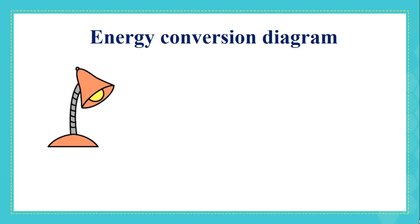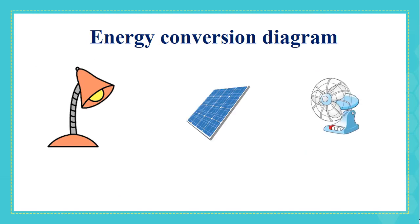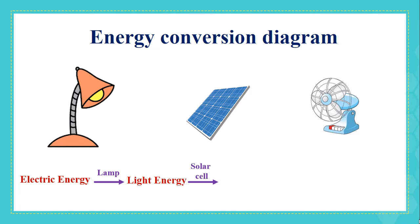Here we have a lamp, a solar cell, and a fan. Our aim is to turn on the fan with the help of the lamp and the solar cell. Write in one diagram the energy transformation taking place in these three converters. First, electric energy is received by the lamp, which transforms it to light energy. The solar cell, in turn, converts the light energy it receives to electric energy. This electric energy is then received by the fan motor, which converts it into mechanical energy. The fan is now turned on.